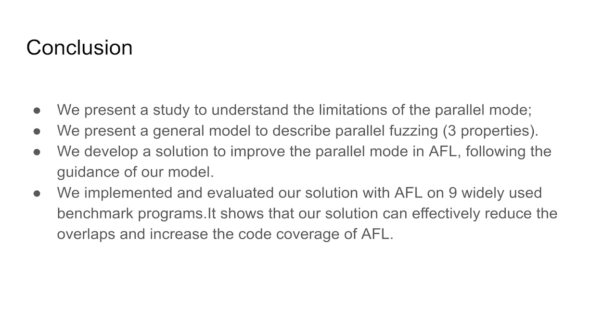In conclusion, this paper focuses on the problem of parallel fuzzing. It presents a study to understand the limitation of the parallel mode in existing grey-box fuzzing tools and proposes a general model to describe parallel fuzzing. This model distributes the mutually exclusive but similar weighted tasks to different instances, facilitating the concurrency and fairness across the instances. Guided by this model, we present a novel solution to improve the parallel mode in AFL. We have implemented our solution on top of AFL and we have evaluated it on nine widely used benchmarks. Our evaluation shows that our solution can significantly reduce the overlap and hence accelerate the code coverage.